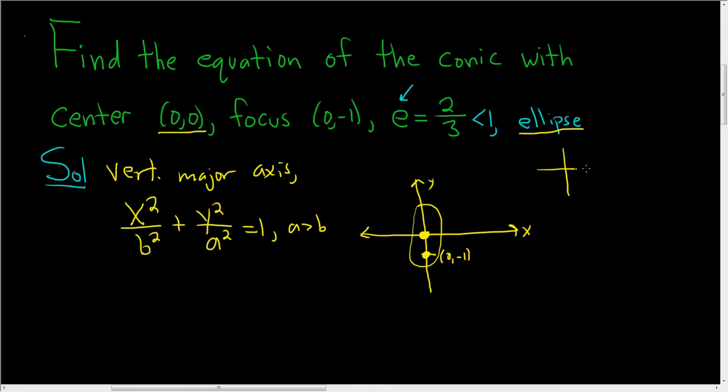Whenever the major axis is horizontal, the a goes under the x, so the bigger number goes under the x. We just have to find a and b.